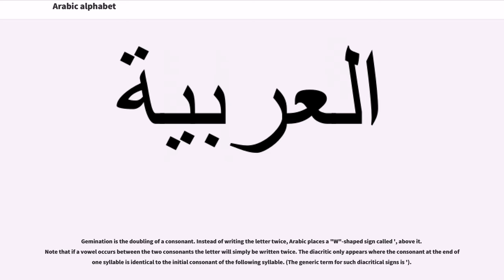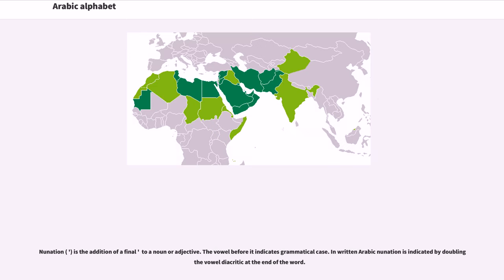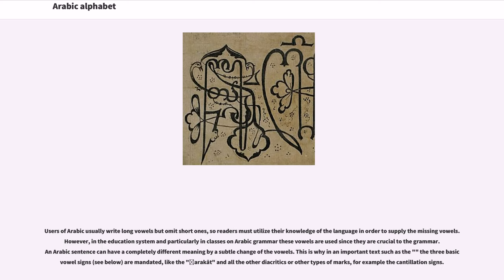The generic term for such diacritical signs is harakat. Tanwīn is the addition of a final nun to a noun or adjective; the vowel before it indicates grammatical case. In written Arabic, tanwīn is indicated by doubling the vowel diacritic at the end of the word. Users of Arabic usually write long vowels but omit short ones, so readers must utilize their knowledge of the language in order to supply the missing vowels. However, in the education system and particularly in classes on Arabic grammar, these vowels are used since they are crucial to the grammar. An Arabic sentence can have a completely different meaning by a subtle change of the vowels.